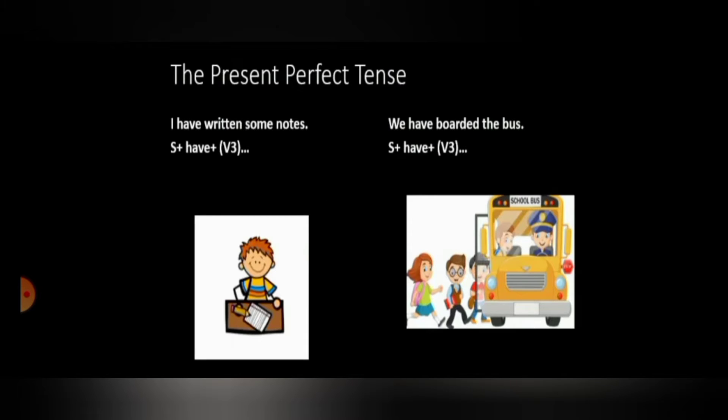I have written some notes. Here, the subject is I plus have plus the third form of the verb written, which is the verb 1 of written is write. Next sentence, we have boarded the bus. Here, the subject is we plus have plus boarded. Boarded is the third form of the verb board.